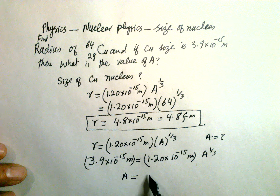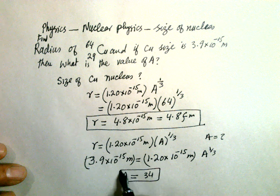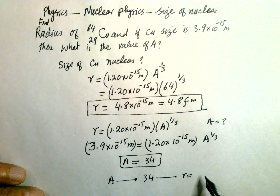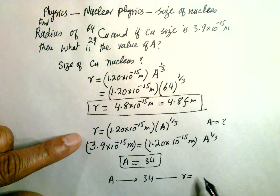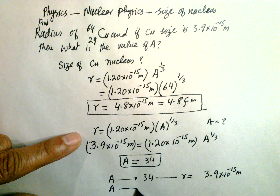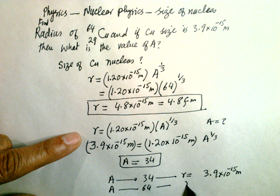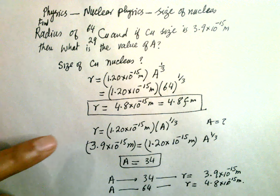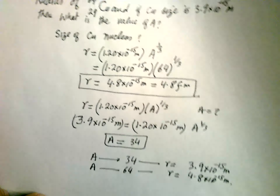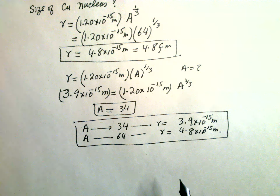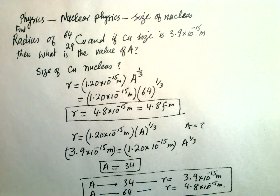So A from here is equal to 34. So if A is equal to 34, the size is equal to 3.9 × 10⁻¹⁵ meter. When A is equal to 64, R is equal to 4.8 × 10⁻¹⁵ meter. That is the result — that is the size of the nucleus.